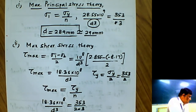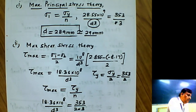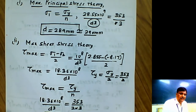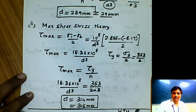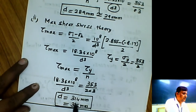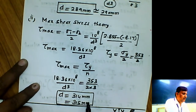With factor of safety of 3, we can solve for the diameter. The diameter of the circular rod obtained from the maximum shear stress theory is 314 mm, which can be rounded up to 315 mm.